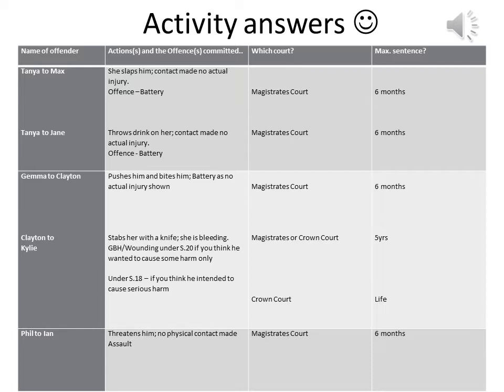That would then go to the magistrate's court and the maximum you can go to prison for that offense is six months. Also in the same clip, Tanya throws a drink on Jane. Now some of you might not think that's an offense, however it is. Throwing a drink on someone, because contact is made, that's enough because again you don't need any actual injuries.